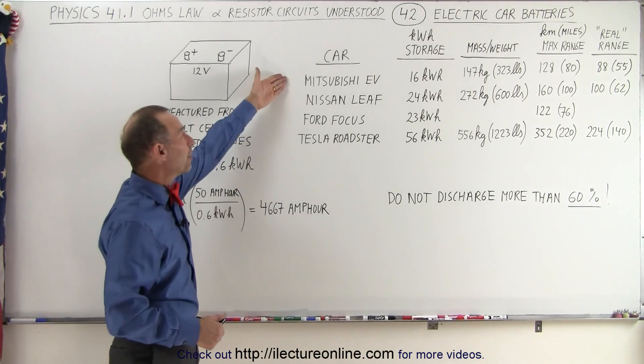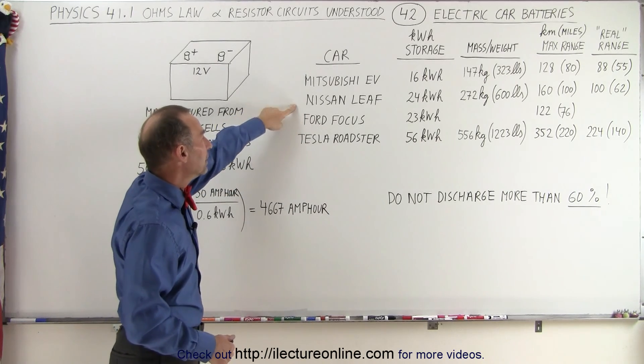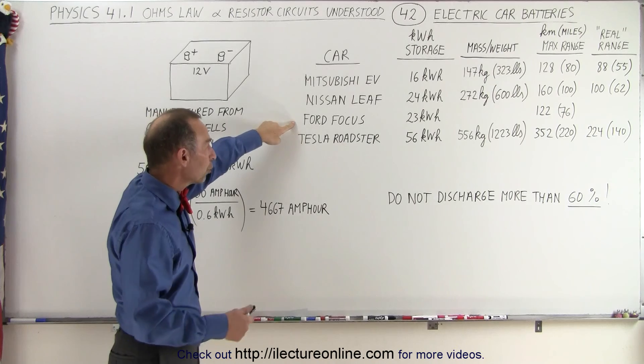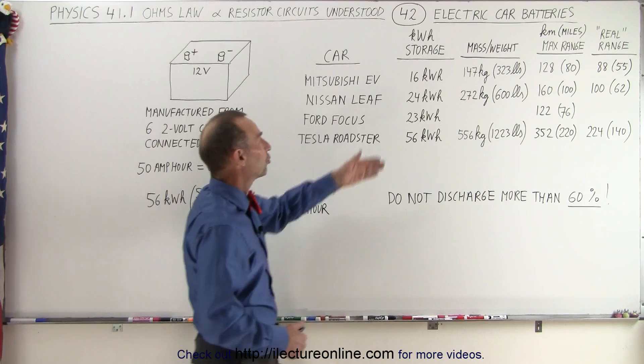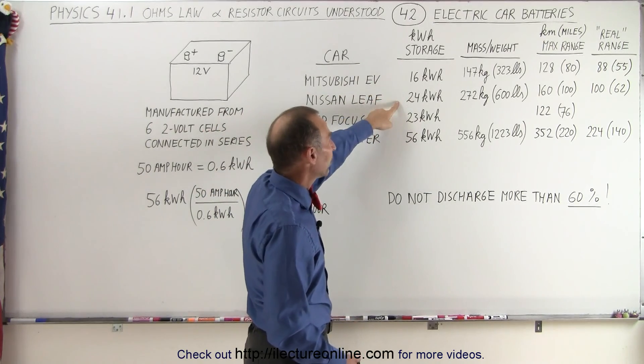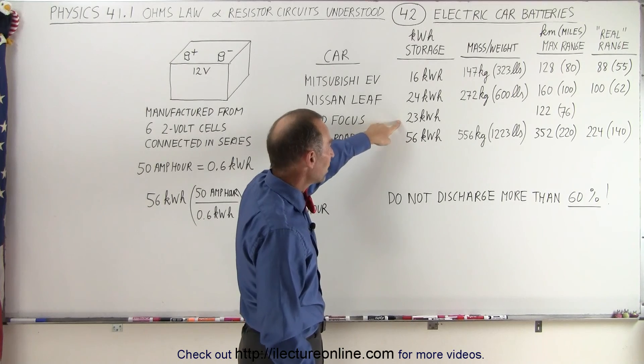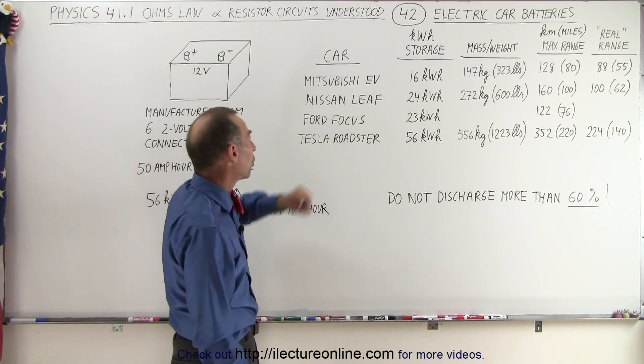So here we have four models as an example. We have the Mitsubishi electric vehicle, the Nissan Leaf, the Ford Focus electric vehicle, and the Tesla Roadster. And notice the storage capacity of these batteries: 16 kilowatt hours, 24 kilowatt hours, 23 kilowatt hours, and 56 kilowatt hours for the Tesla Roadster.